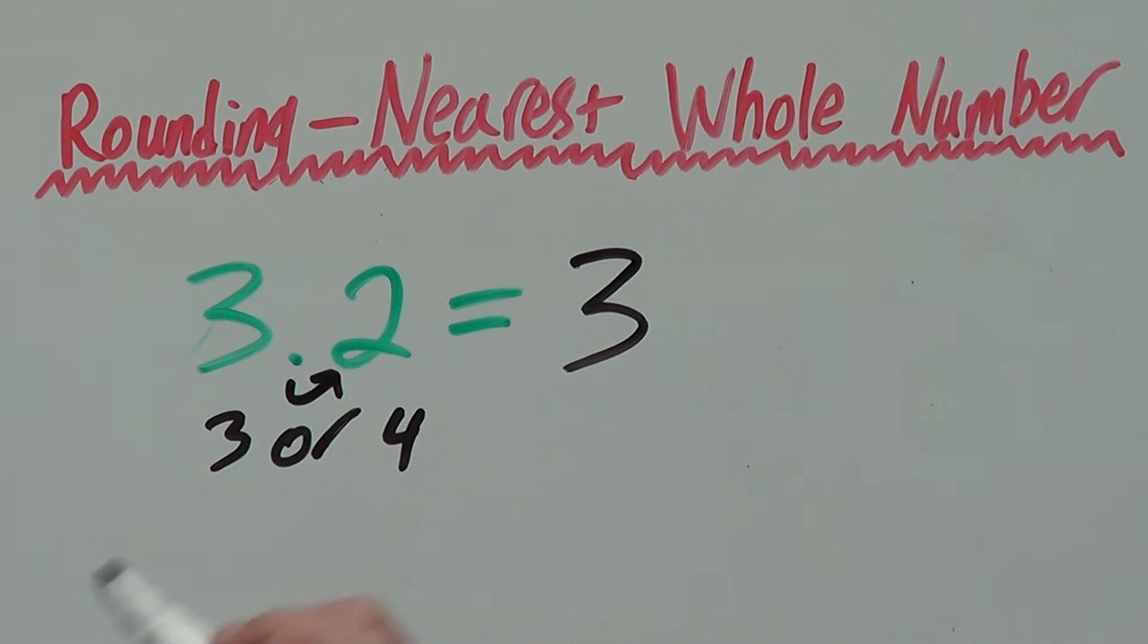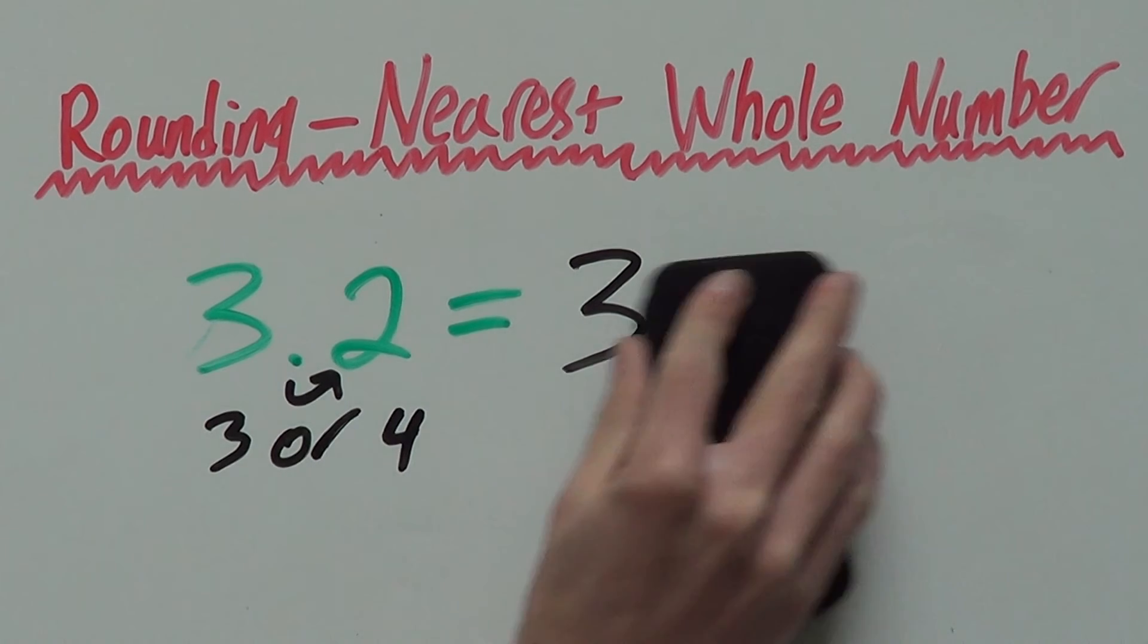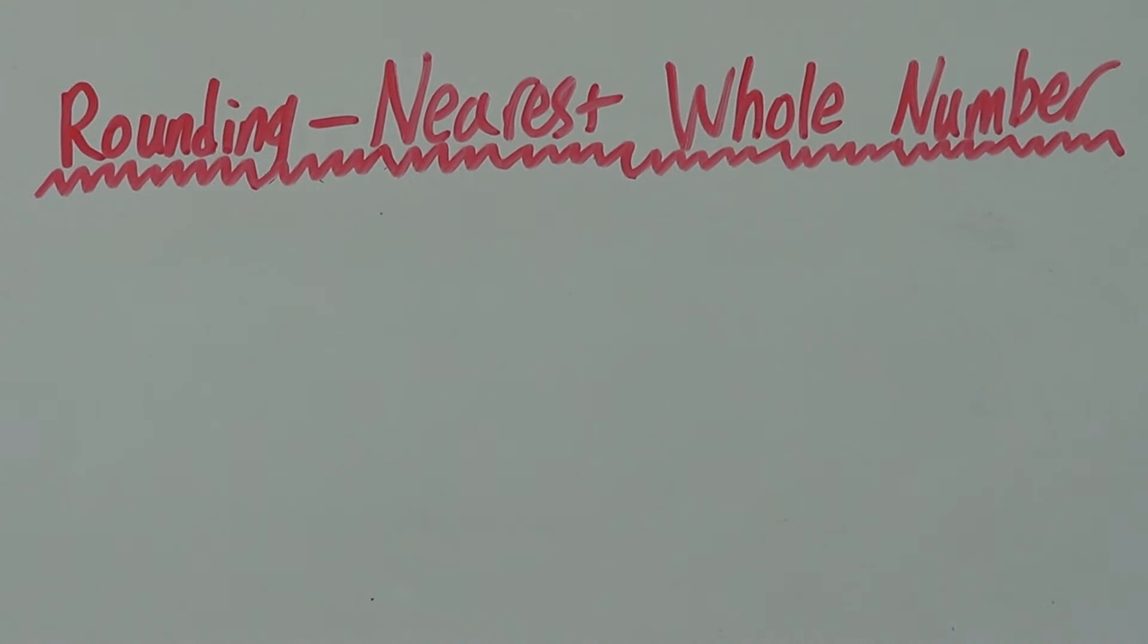You can see this as the number right behind the decimal is 2 and 2 is less than 5, so we round down to 3. I just have two more problems for you and these two are important as they are slightly harder than the last two.